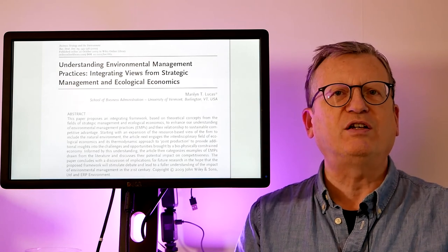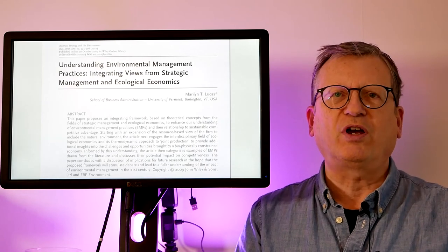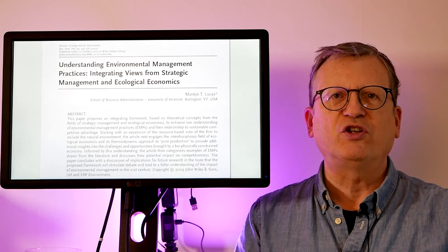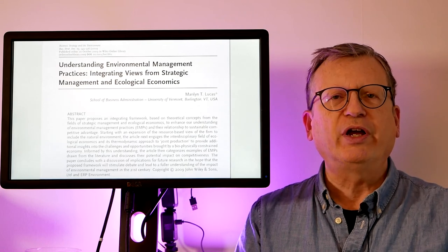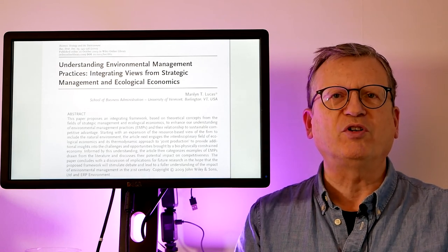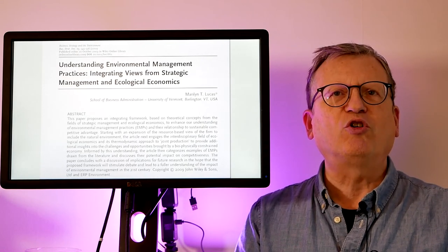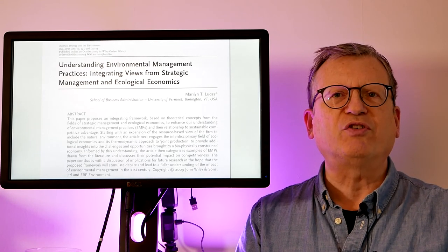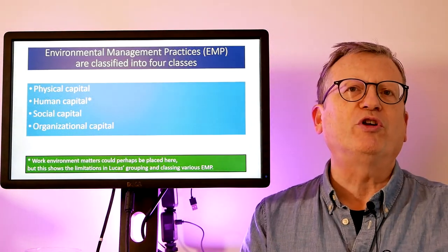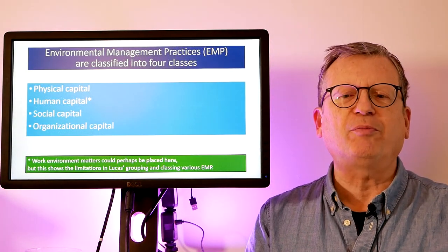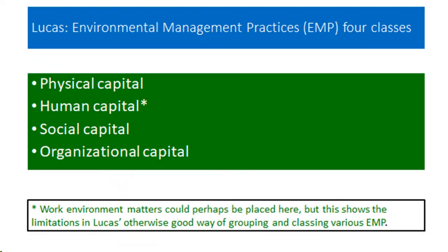Lucas in her article attempts to look at various what she refers to as environmental management practices — either ones she herself has identified or identified through reading the academic literature on environmental management. What kind of practices do companies or organizations carry out with regard to the environment, and how could these be classified? She classifies them according to four different kinds of capital: physical capital, human capital, social capital, and organizational capital.